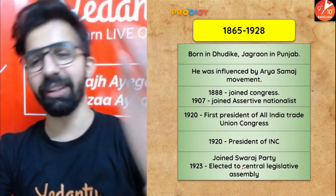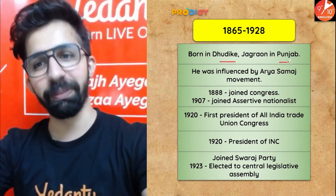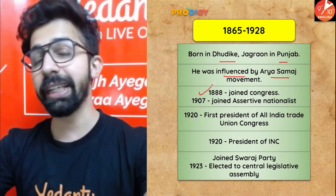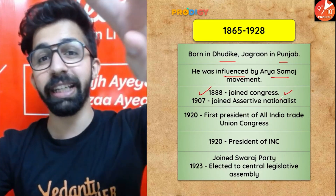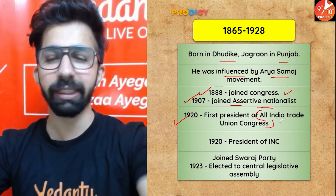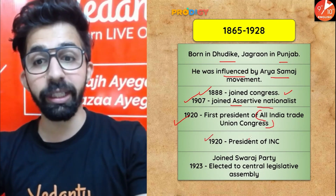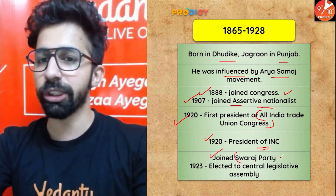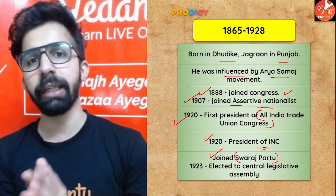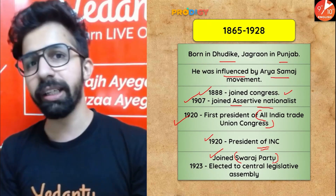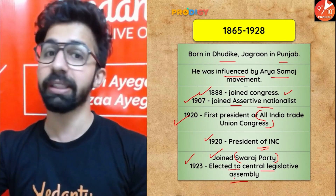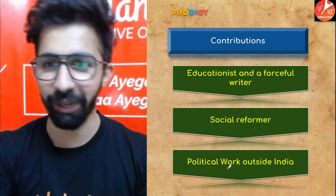Lala Lajpat Rai was born in Dhudike, Punjab. He was influenced by Arya Samaj. In 1888 he joined Congress, which was formed in 1885. In 1907 he joined the assertive nationalists. In 1920 he became the first president of AITUC — the All India Trade Union Congress. He then joined the Swarajya Party, which was formed under the Indian National Congress to participate in provincial elections, and in 1923 was elected to the Central Legislative Assembly.